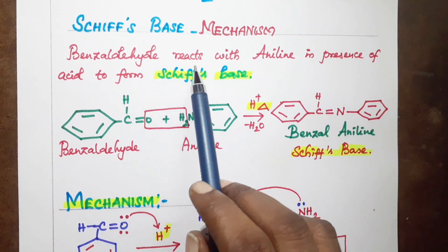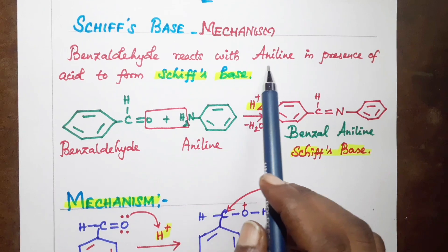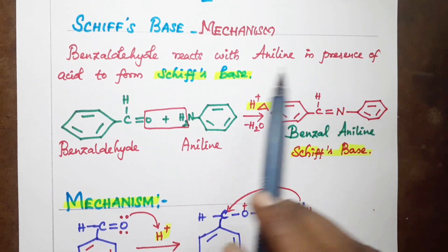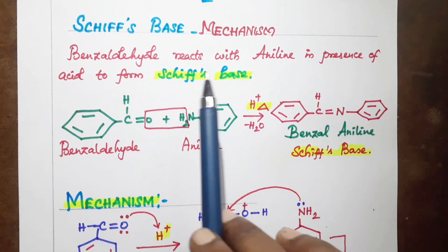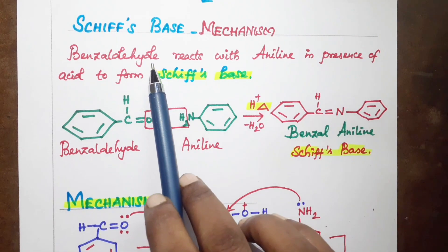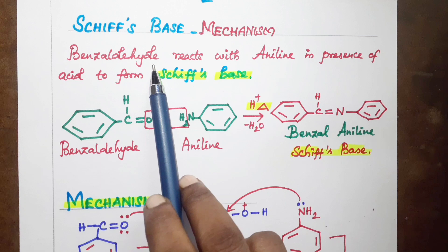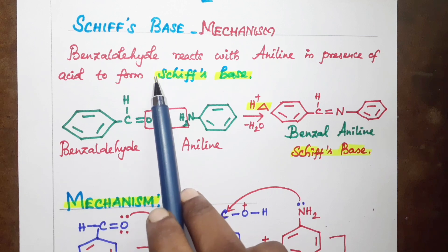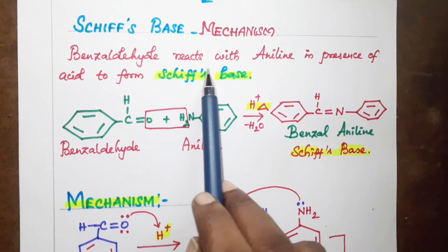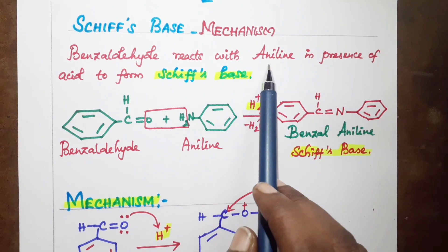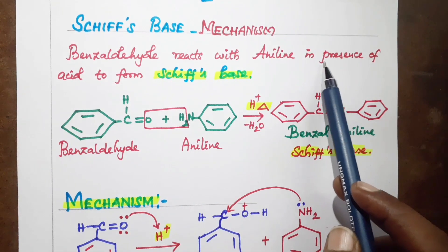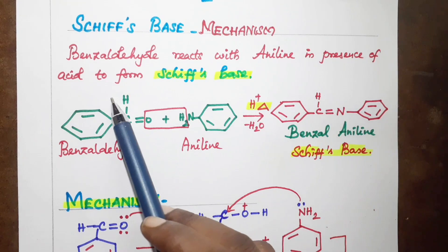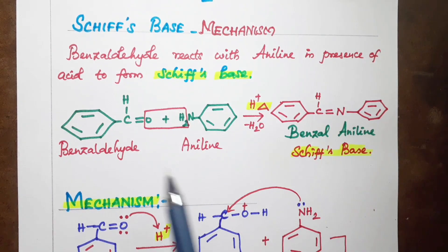Benzaldehyde reacts with aniline in the presence of acid to form a Schiff's base. Aniline is a primary amine, and in the presence of acid, this reaction produces a Schiff's base compound.